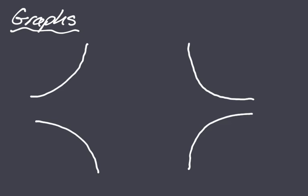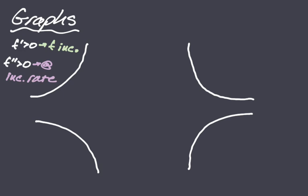Sometimes you're just given graphs, so let's go through the same analysis for four graphs. For the first graph, the function is increasing, so f prime is greater than zero. And because this function is concave up, f double prime is greater than zero, which always means we say 'at an increasing rate.' This graph is increasing at an increasing rate. The slopes are positive and getting bigger — the function is increasing at an increasing rate because they're getting more positive.